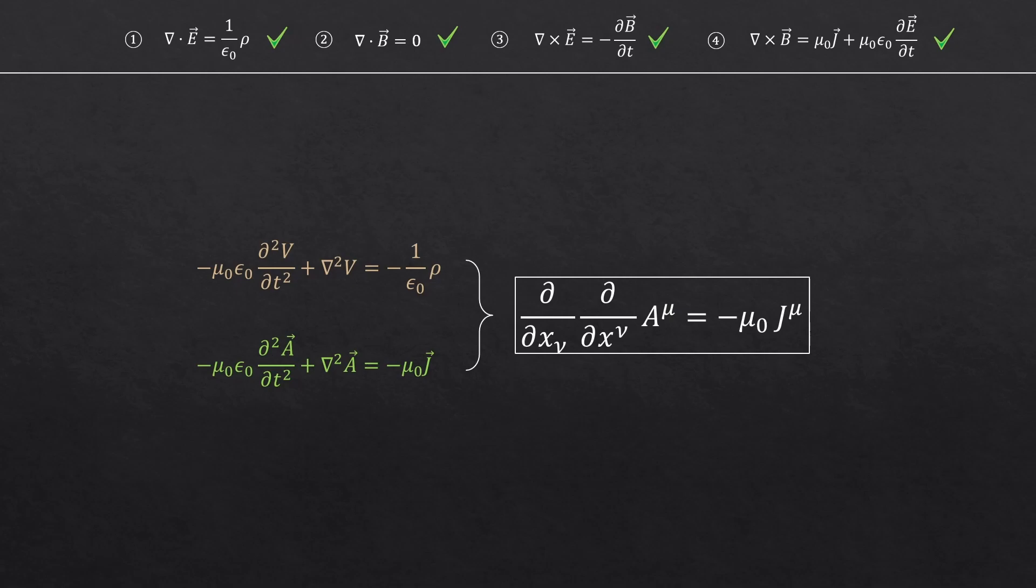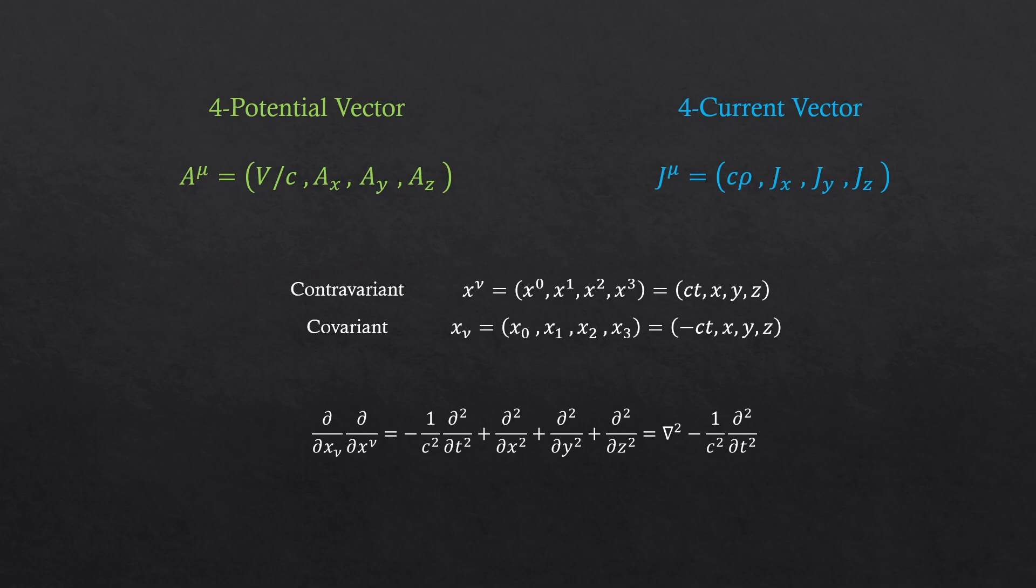Now these two expressions already look nice and consistent. How can we combine them into one equation? In our four dimensional world, any vector could be expressed in something called a four vector. This is a four potential vector and this is four current vector.